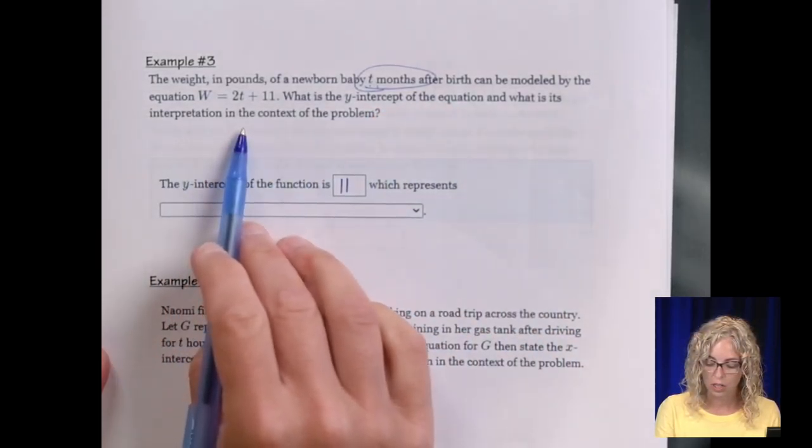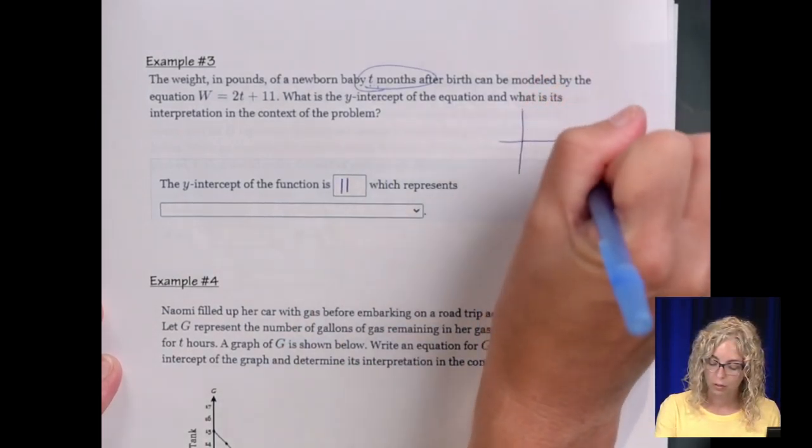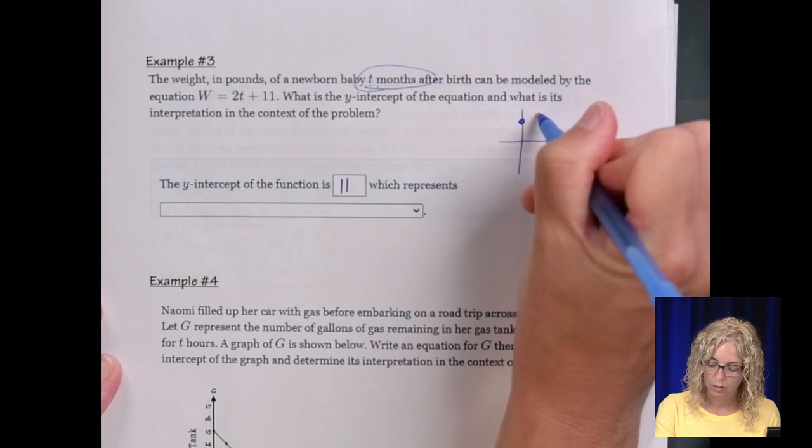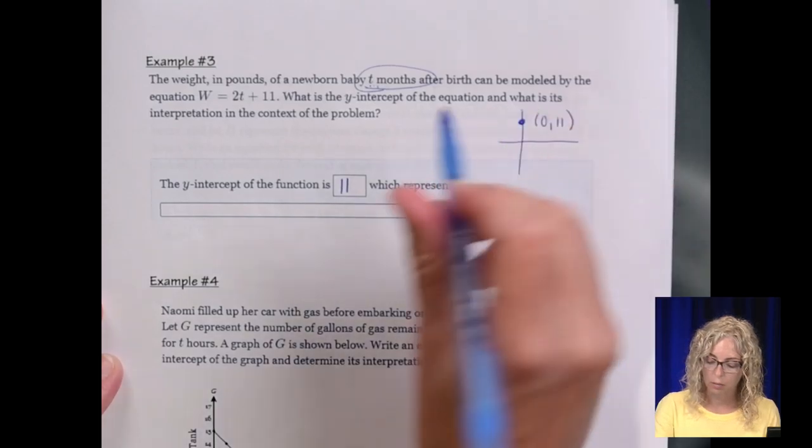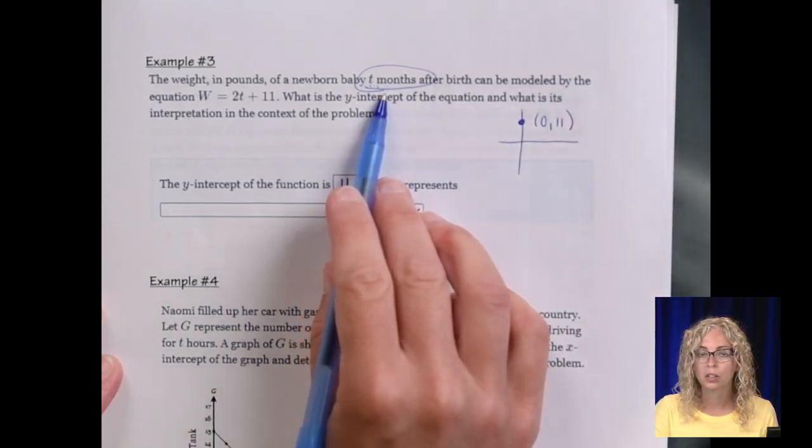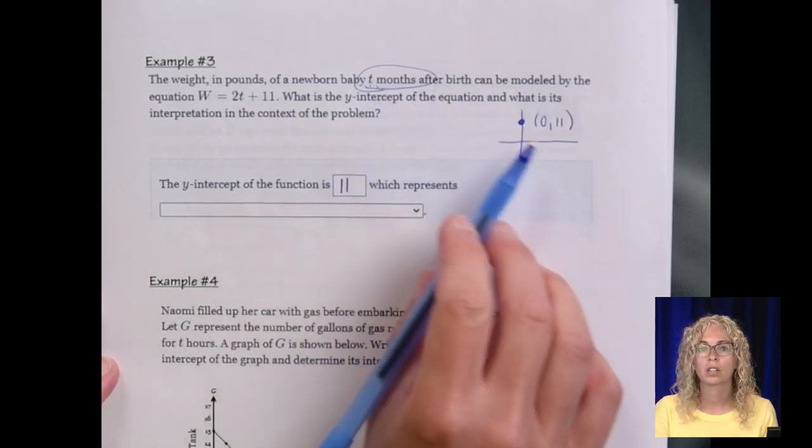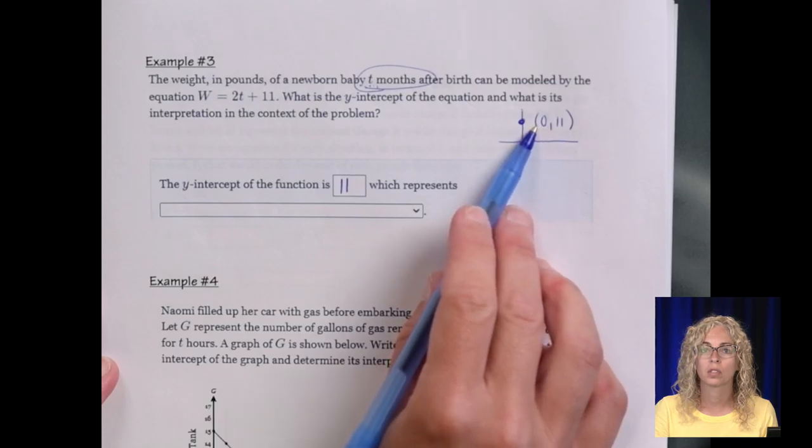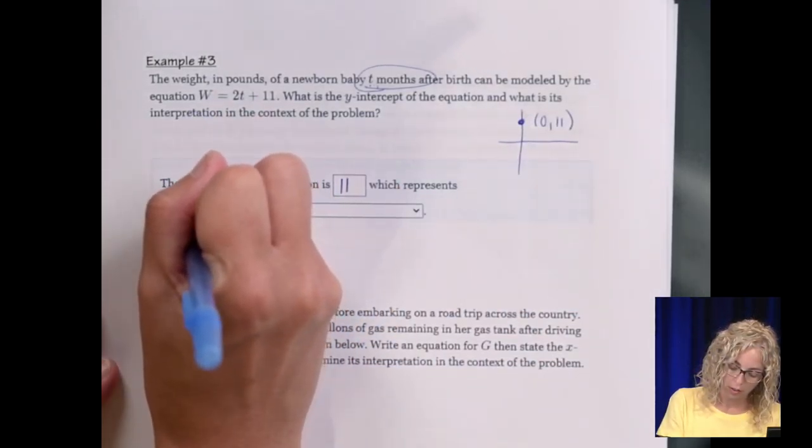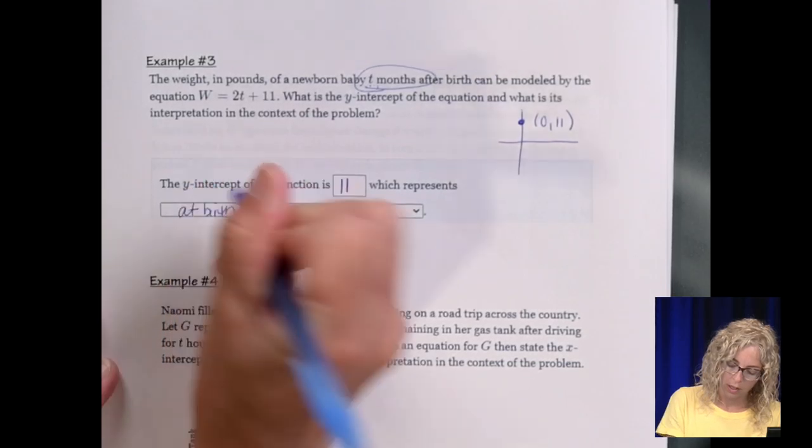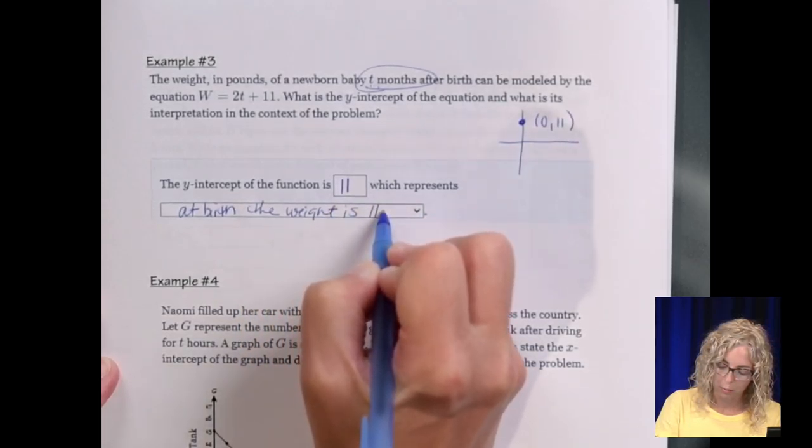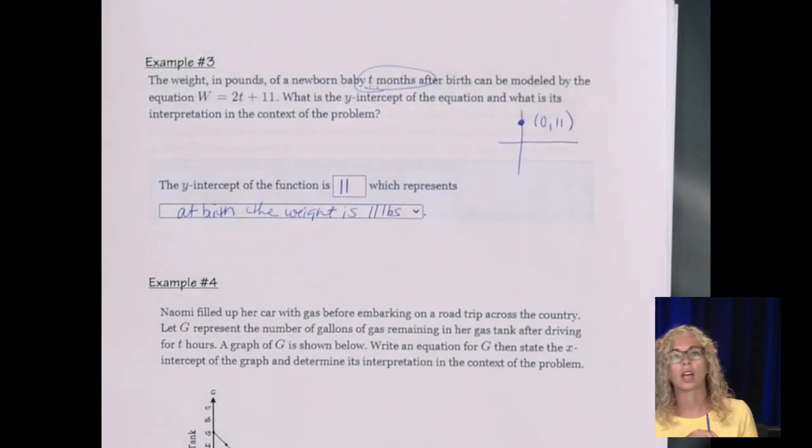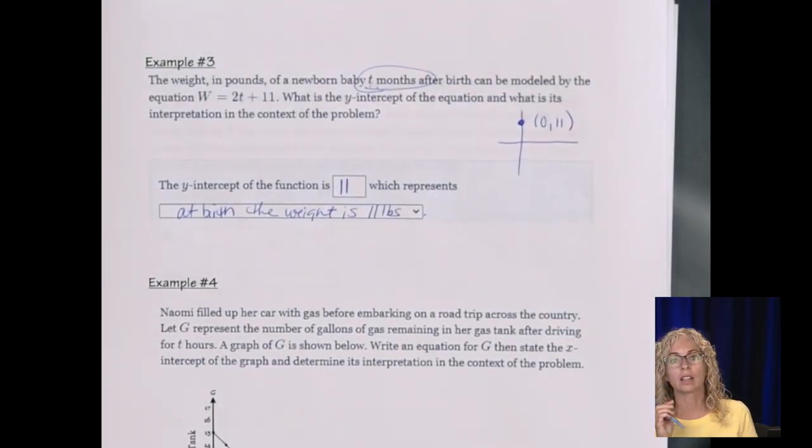And what is its interpretation in the context of the problem? Well, remember, the y-intercept here is 0, 11. So t is the months after it was born. So mx plus b. So the y-intercept is 11. That means the months born was 0. So at birth, the weight was 11 pounds. Or you can say, at a time of 0, or at 0 months, the weight is 11.